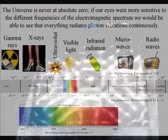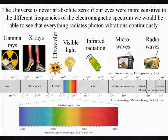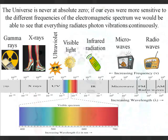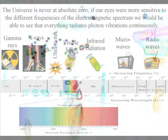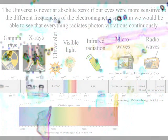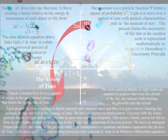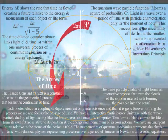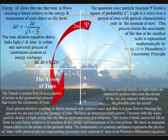This is because the universe is never at absolute zero. If our eyes were more sensitive to the different frequencies of the electromagnetic spectrum, we would be able to see that everything is radiating photon oscillations, or vibrations, continuously. The prime example of this is photon energy continuously cascading down from the sun, forming greater degrees of freedom for the disorganization of entropy that we have in the second law of thermodynamics.